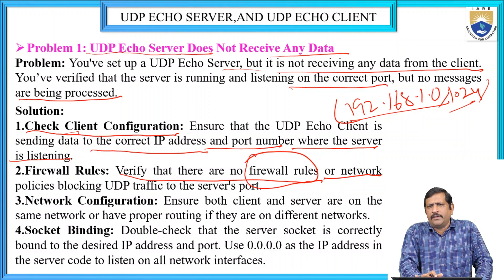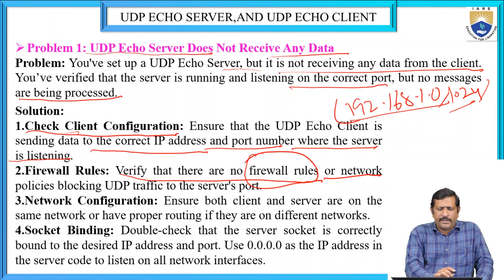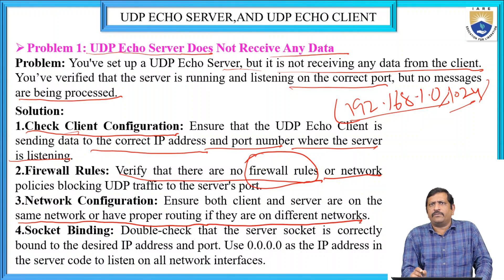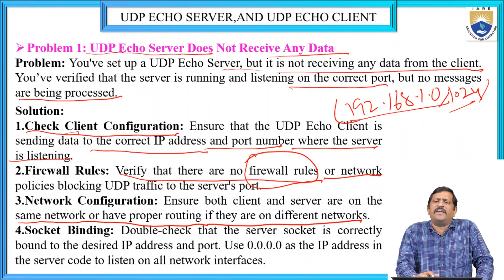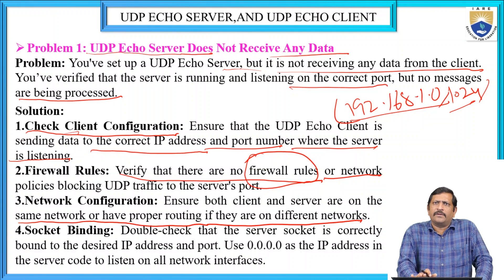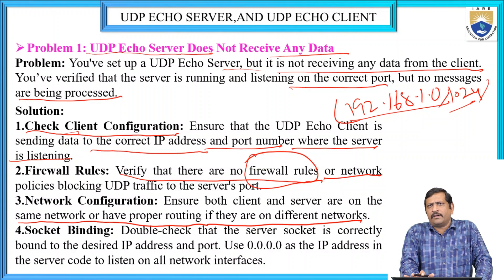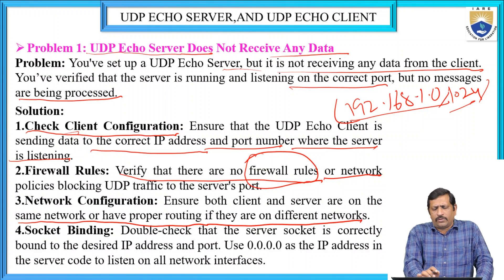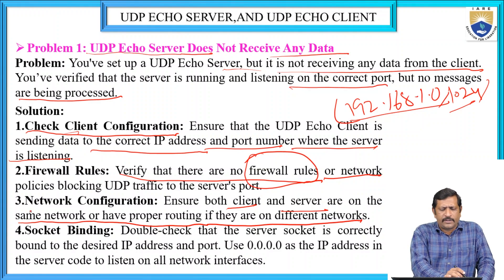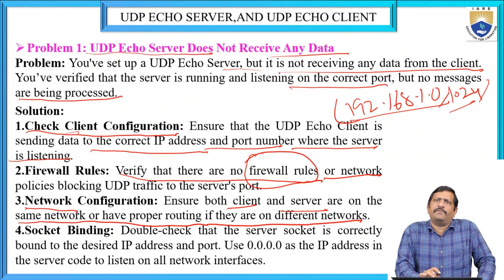Next, check network configuration. Ensure both client and server are on the same network or have proper routing. If they are on different networks, separate configurations are required — we have to configure both client and server separately. If they are on the same network, we just need to set the network configuration to resolve communication problems.